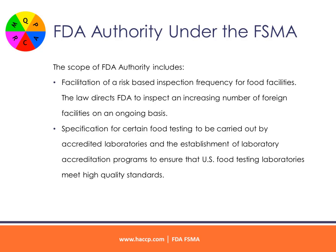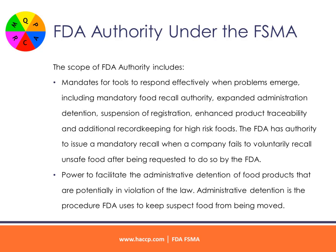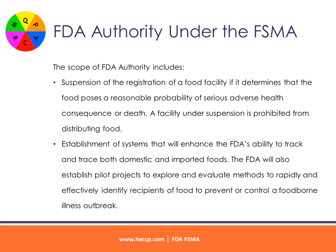Specifications require certain food testing to be carried out by accredited laboratories and establish laboratory accreditation programs to ensure that U.S. food testing laboratories meet high-quality standards. Mandates for tools to respond effectively when problems emerge include mandatory food recall authority, expanded administrative detention, suspension of registration, enhanced product traceability, and additional record-keeping for high-risk foods. The FDA has authority to issue a mandatory recall when a company fails to voluntarily recall unsafe food. The FDA also has power to facilitate administrative detention of food products potentially in violation of the law — keeping suspect food from being moved — and may suspend the registration of a food facility if it determines that the food poses a reasonable probability of serious adverse health consequence or death. A facility under suspension is prohibited from distributing food.